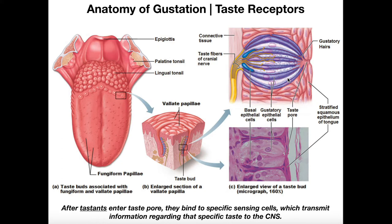Each one of these taste receptor cells responds to a particular kind of tastant. We're going to learn that there are five, possibly six different kinds of tastes. Some of those include sweet, salty, and sour. For example, suppose this taste receptor cell has receptors specifically for sweet. If we get some sucrose — which is a sugar and is sweet — it can enter through the taste pore from the oral cavity, move through the taste pore, and interact with those receptors on the gustatory hairs specifically on the cell that detects sweet. But sucrose would not interact with the receptors on, say, a sour cell adjacent to it, because each one of these cells responds to a different stimulus — maybe one is sweet, one is sour, one is umami.